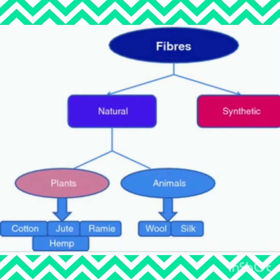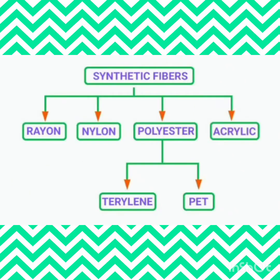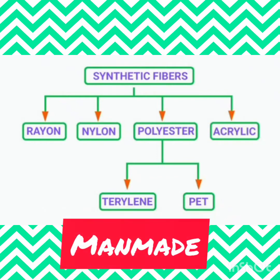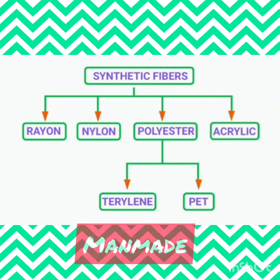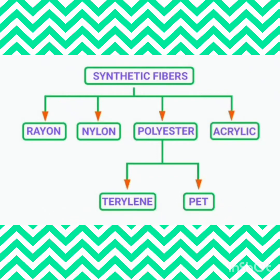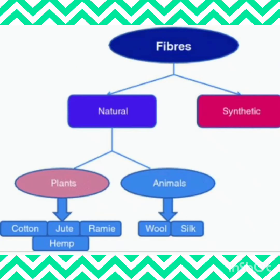Man-made fibers are otherwise called synthetic fibers. Now we will see the classification of natural and synthetic fibers. Natural fibers come from plant sources or animal sources. From plant sources, we get two types: cotton and jute. From animal sources, we get wool and silk.